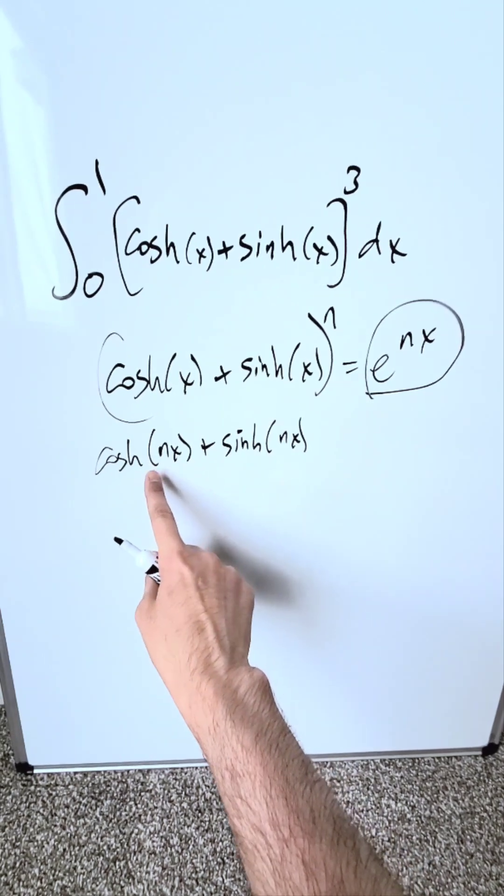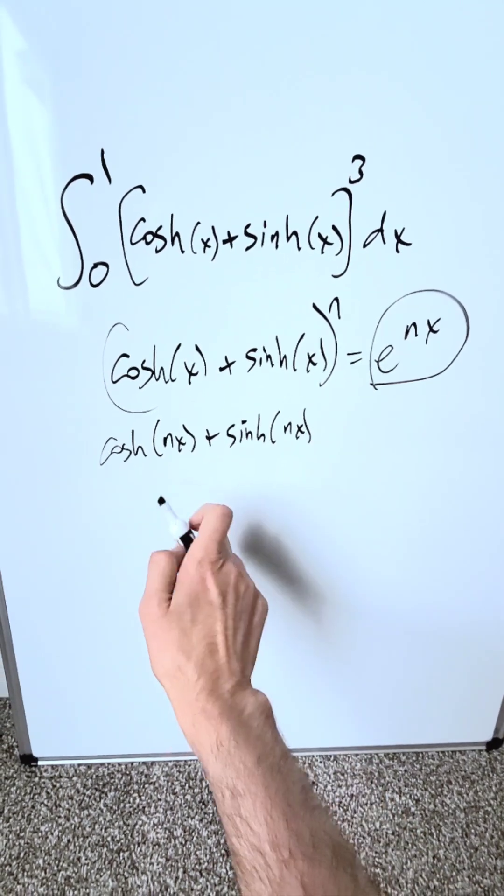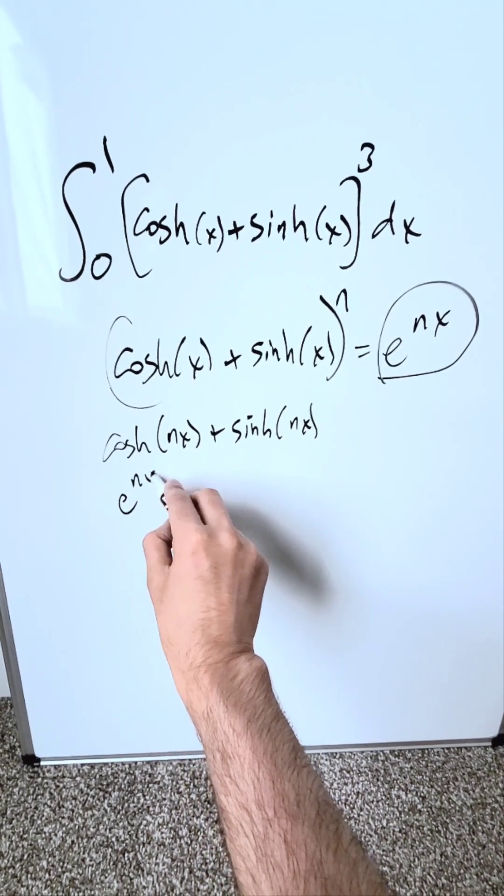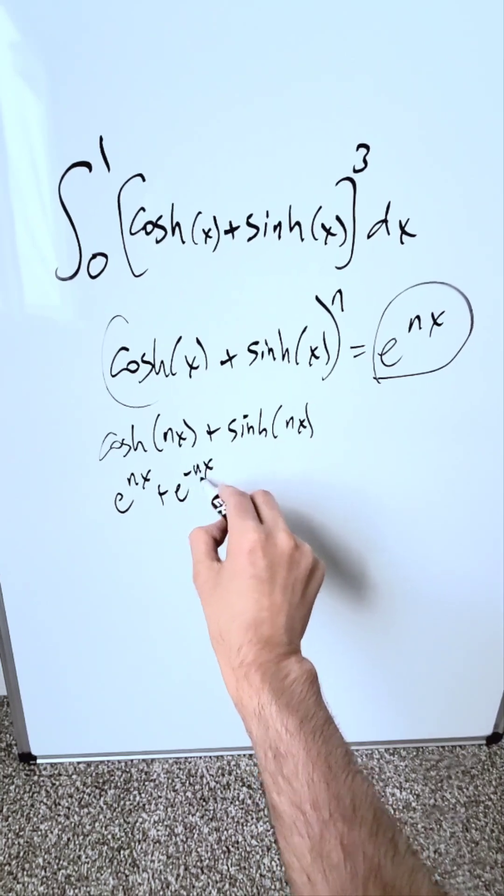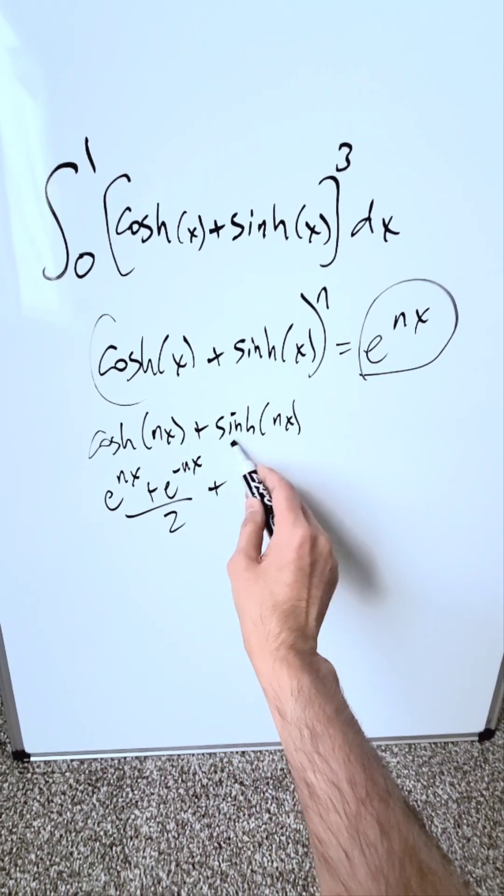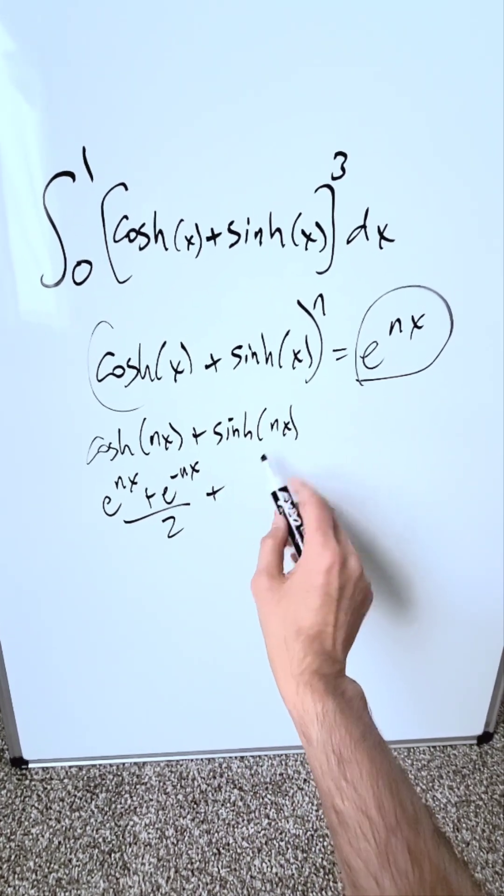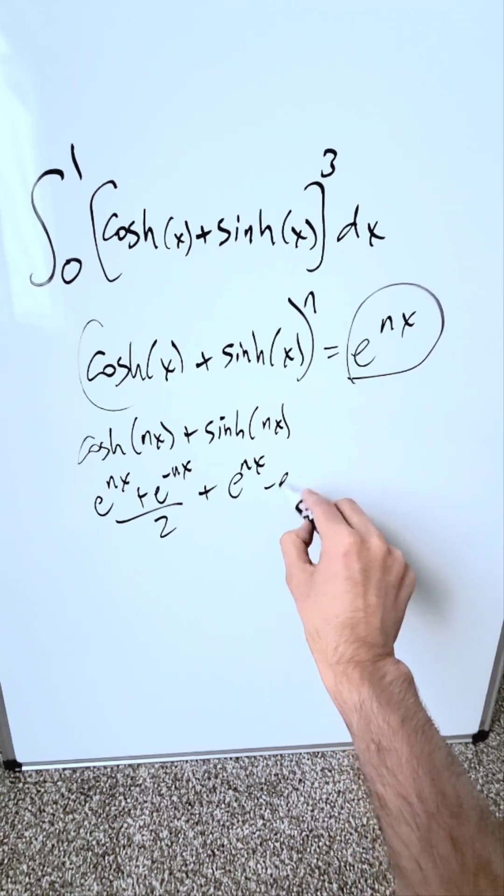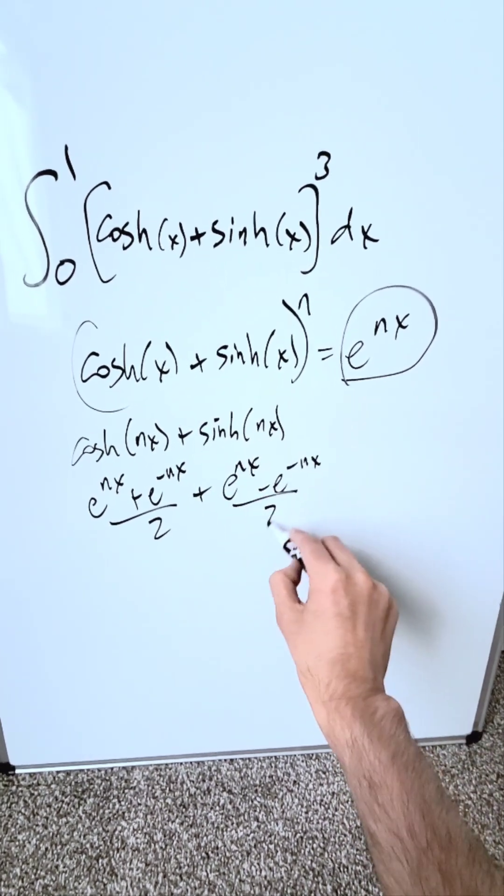Now you've gotten rid of the exponent and incorporated it into your function. Then you would run the n value to the definitions of these two hyperbolic functions. You would have e to the power of nx plus e to the power of minus nx all over 2, plus e to the nx minus e to the minus nx over 2.